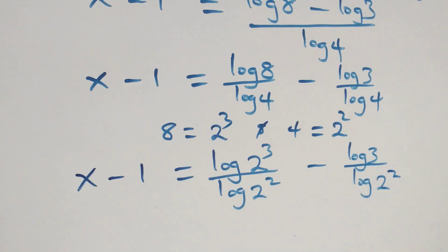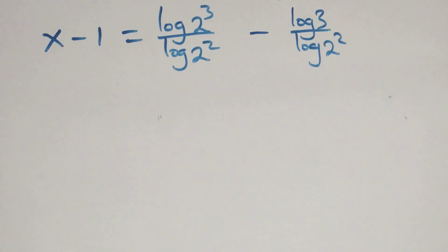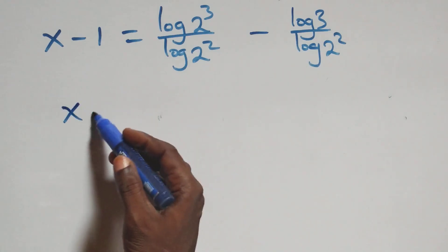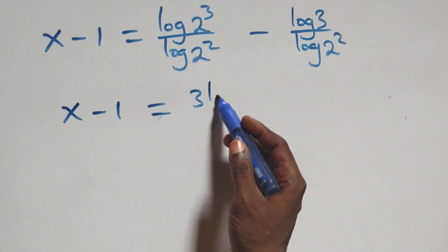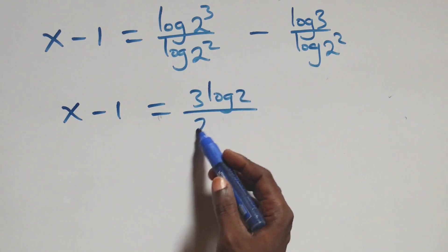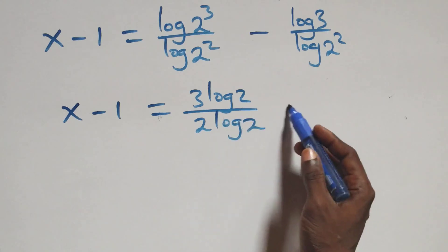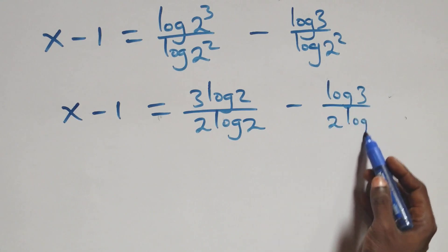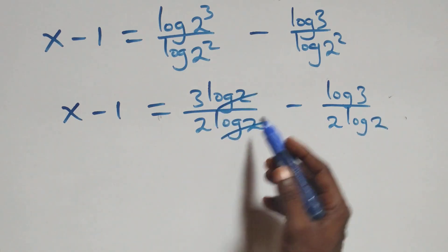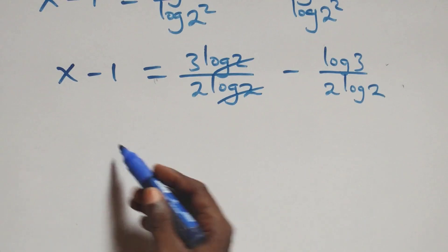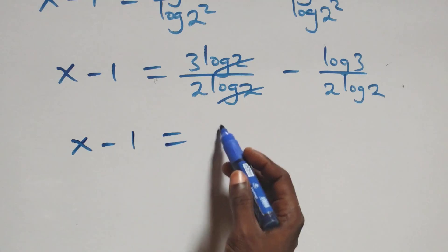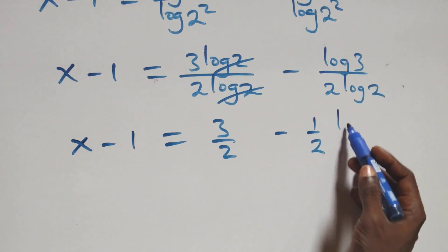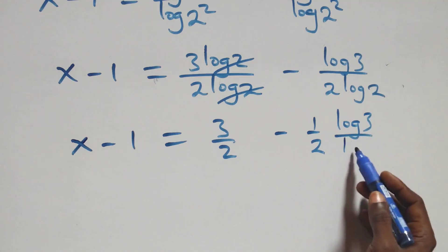Applying the power rule again, 3 comes out from log 2 cubed and 2 comes out from log 2 squared. So x minus one equals 3 log 2 over 2 log 2, and the log 2 terms cancel, giving 3 over 2. Then minus 1 over 2 times log 3 over log 2.